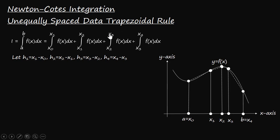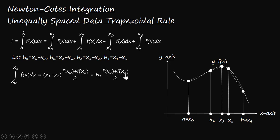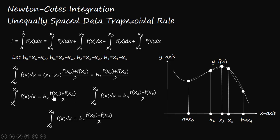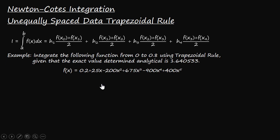Next, we can apply the trapezoidal rule to evaluate these four integrals. The integration from x₀ to x₁ using the trapezoidal rule is written as (x₁ − x₀) multiplied by (f(x₀) + f(x₁)) divided by 2, which simplifies to h₁ × (f(x₀) + f(x₁)) / 2. Similarly, we apply the trapezoidal rule to the other three integrals. Substituting these integral values into the formula, we get the required formula to evaluate the approximate integral of f(x) from a to b with unequally spaced data points.